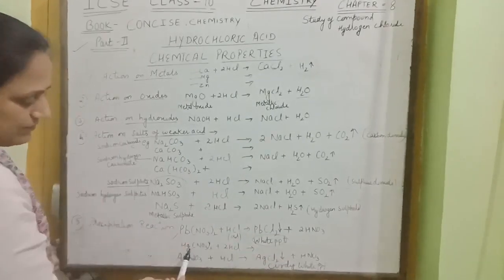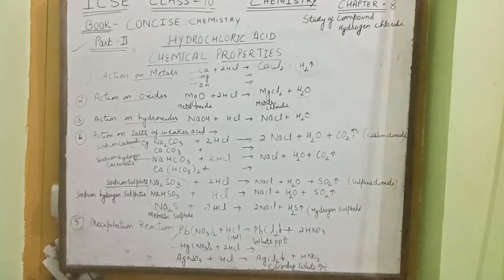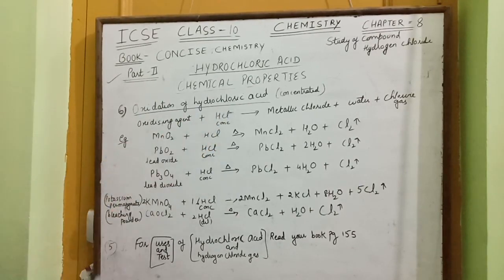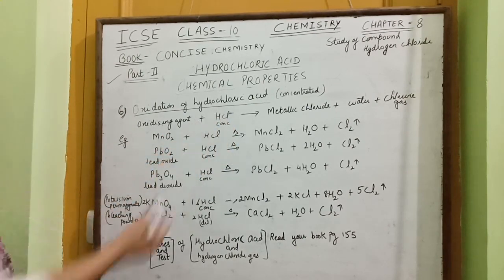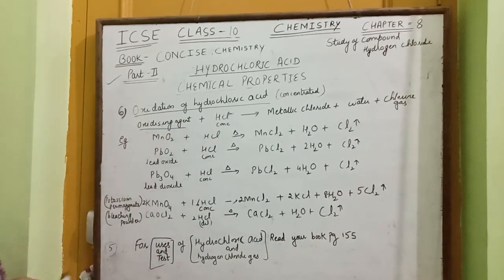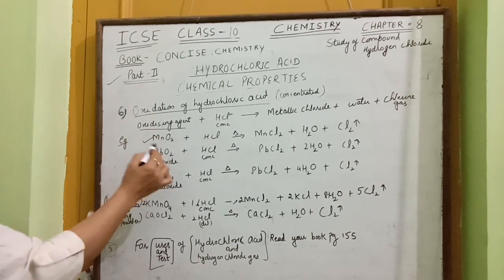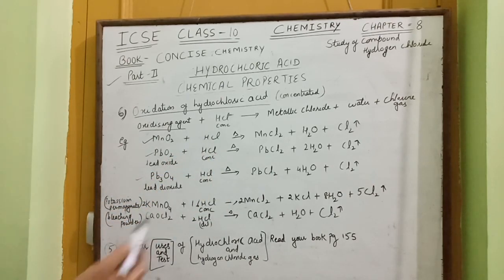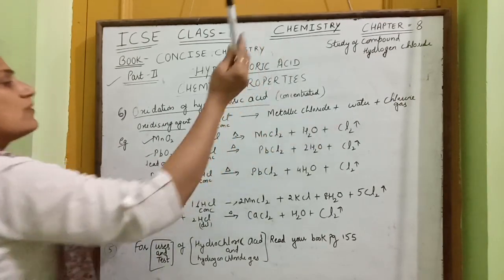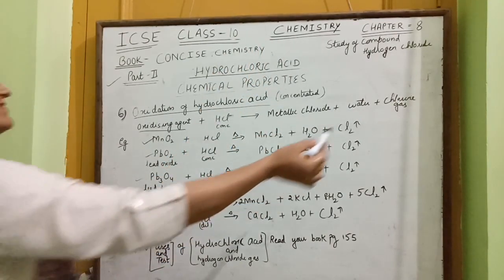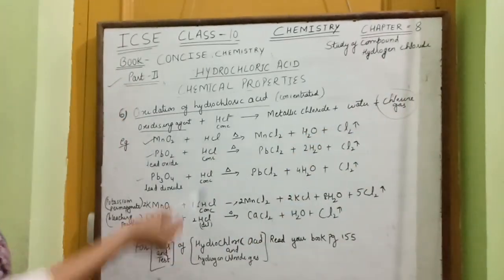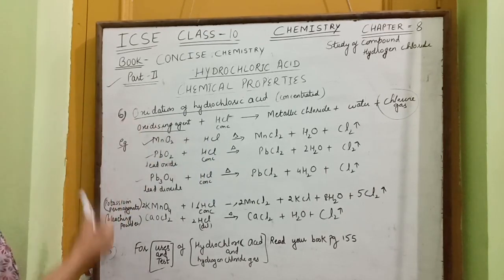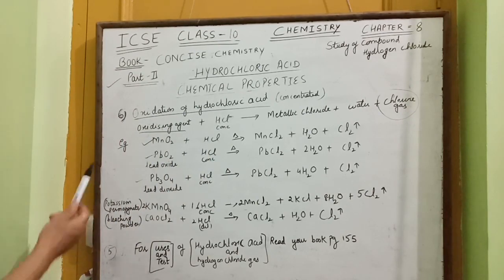The next chemical property is the oxidation of hydrochloric acid. When concentrated hydrochloric acid is added to any oxidizing agent — such as manganese dioxide (MnO2) or lead dioxide (PbO2) — you get metallic chloride, water, and chlorine gas. The main observation here is the formation of chlorine gas when concentrated hydrochloric acid is added to an oxidizing agent.